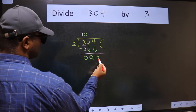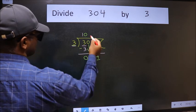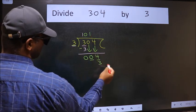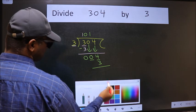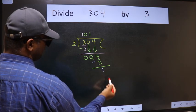Now 4. A number close to 4 in 3 table is 3 times 1 is 3. Now we should subtract. We get 1.